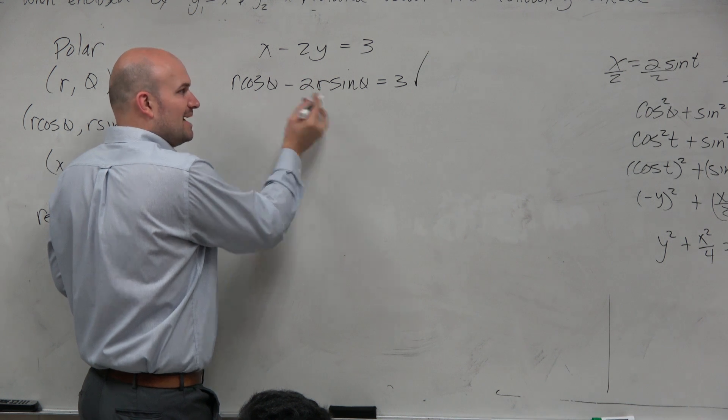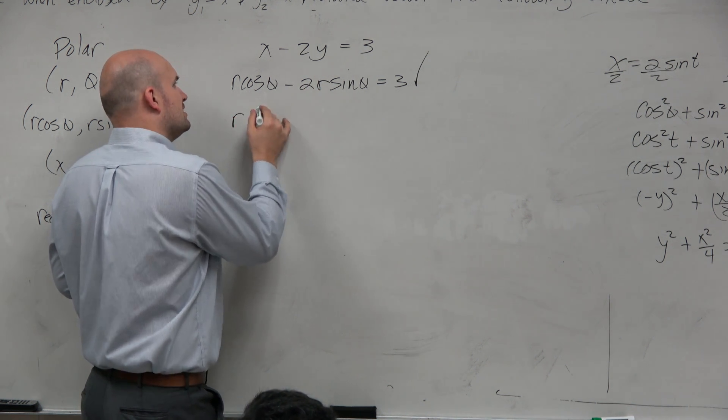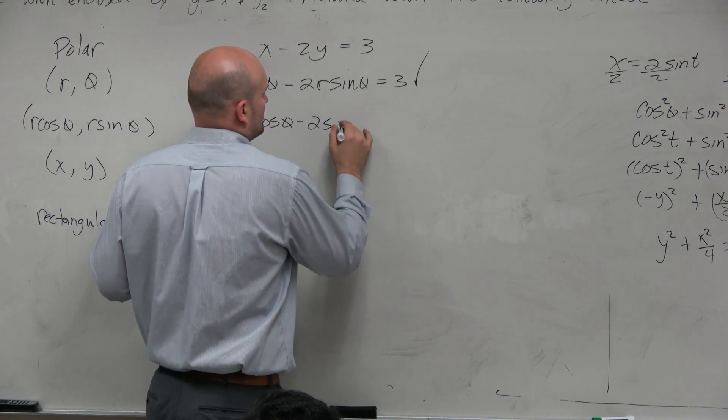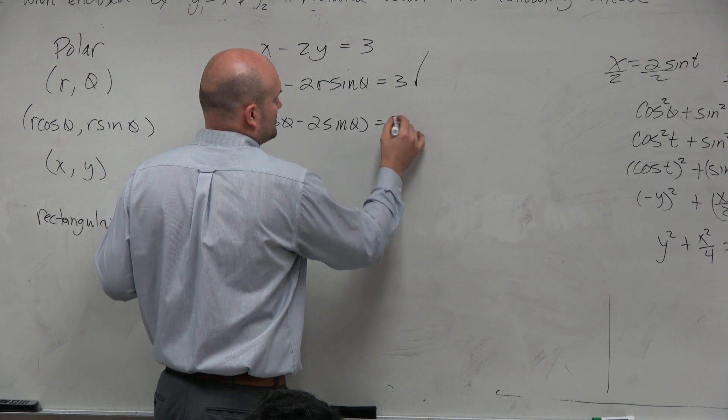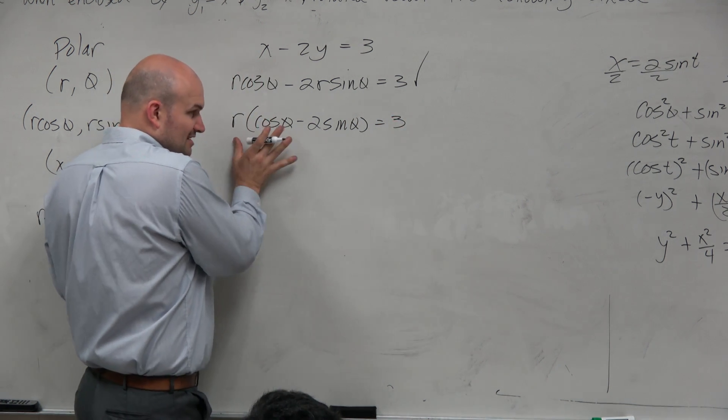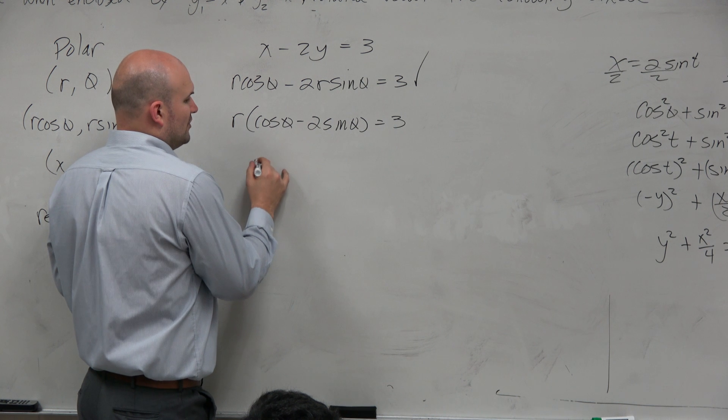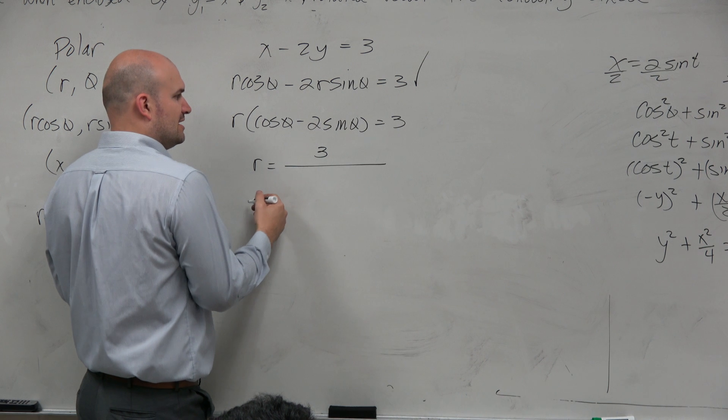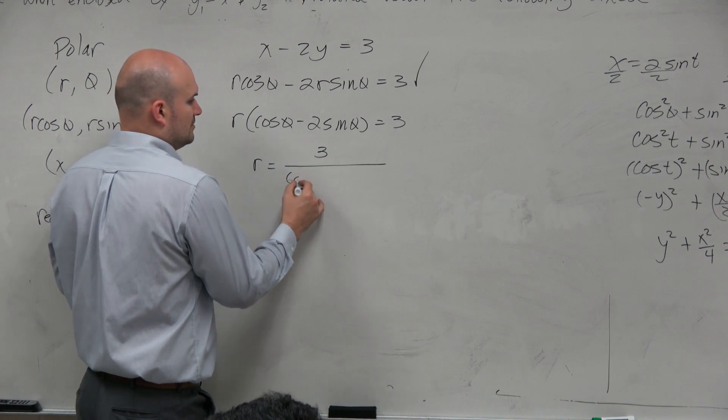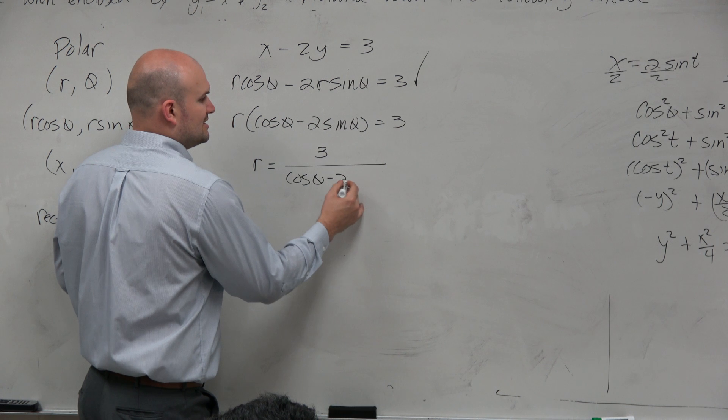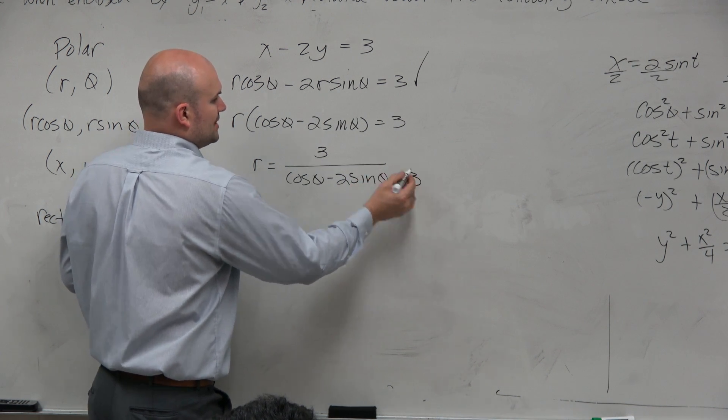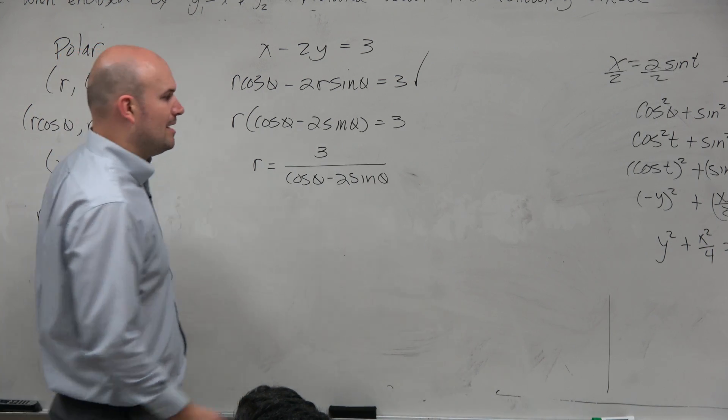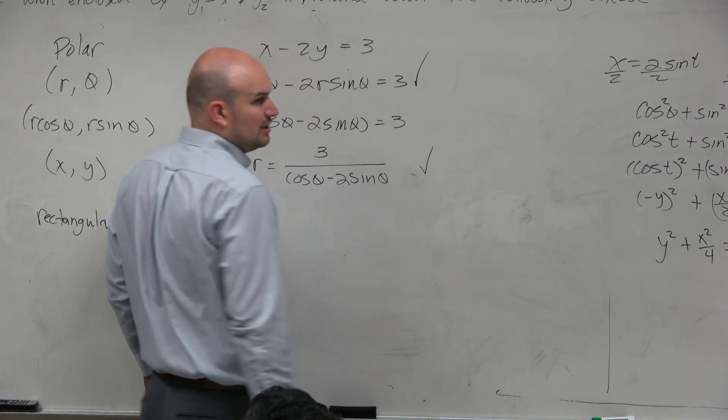So I can't combine these, but I can factor out an r. When I factor out an r, I'm left with r times cosine of theta minus 2 sine of theta equals 3. Notice my r is being multiplied by this whole quantity. So therefore, I'm going to have to divide that quantity on both sides. To save myself a little work, I'm just going to write that as r equals 3 divided by cosine of theta minus 2 sine of theta. And that would probably be what your answer choice would more likely than not look like.